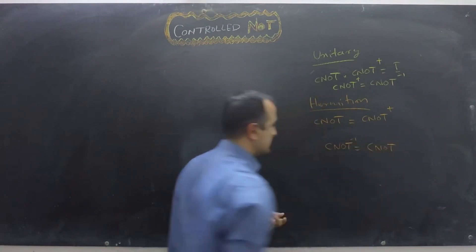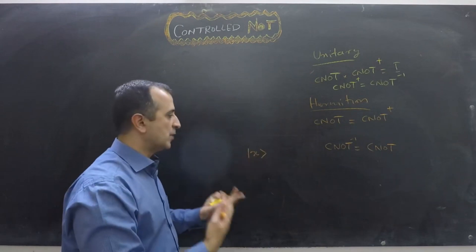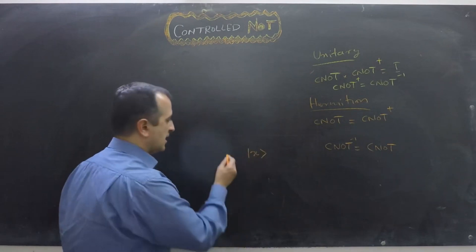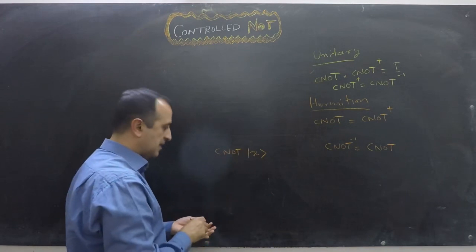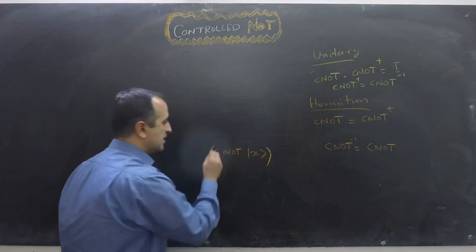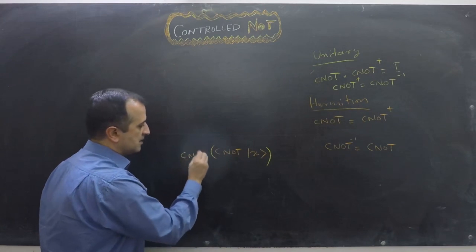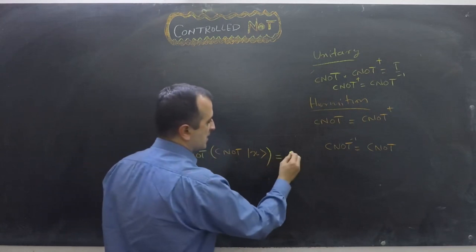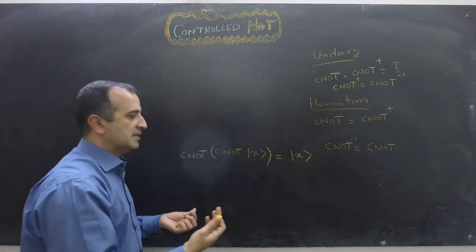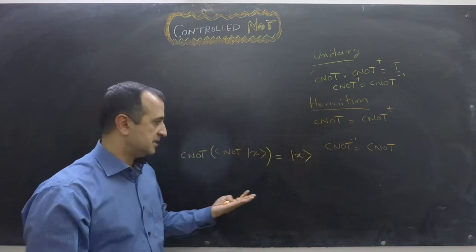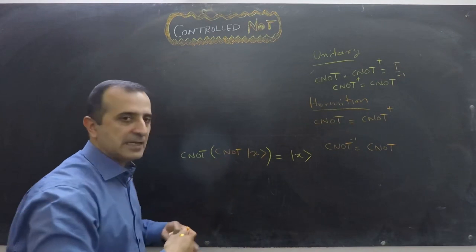This implies that if we take a two-qubit register and apply CNOT, then apply CNOT once again on the result, the answer will be the original input |x⟩. The input remains unchanged because the two CNOT operations cancel each other's effect.